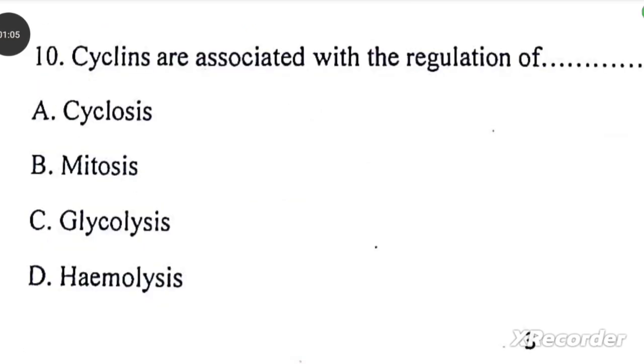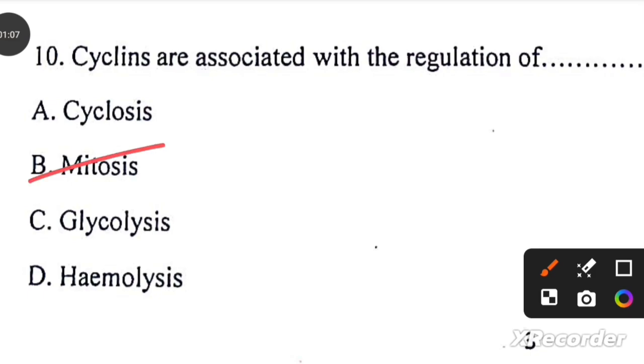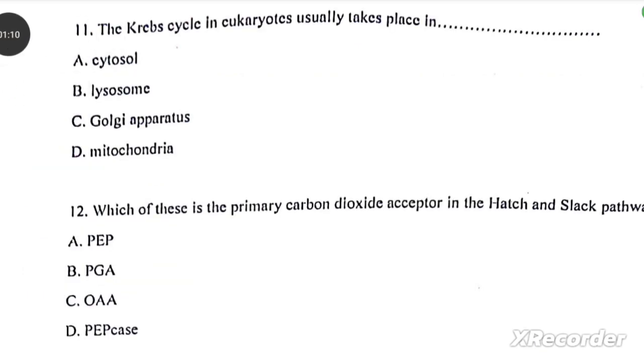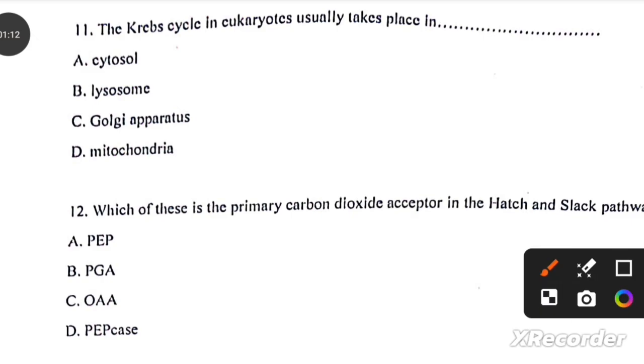Cyclins are associated with the regulation of mitosis. The Krebs cycle in eukaryotes usually takes place in mitochondria. Which of these is the primary carbon dioxide acceptor in the hatch and slack pathway? Chirtan, option A.